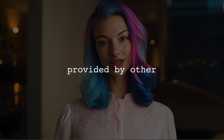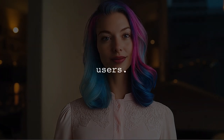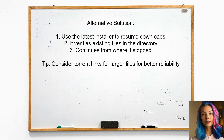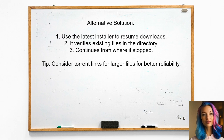Now let's look at the answers provided by other users. This user suggests that you can resume the offline installation of Visual Studio 2017 — the latest installer checks the existing files in the directory and continues the download from where it left off. They also recommend providing torrent links for the Visual Studio Community Edition, as this method is more reliable for large files.